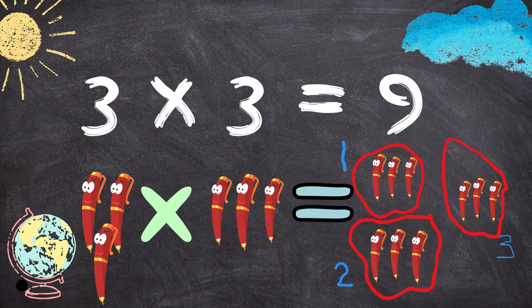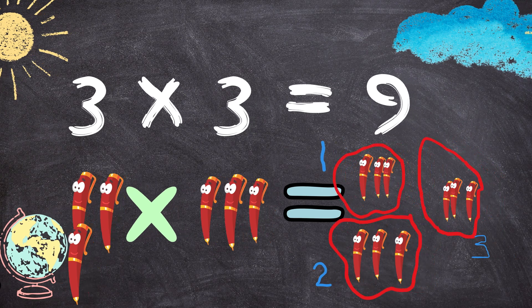Three times three equals to nine. Three pans multiplied by three pans equals to nine pans.